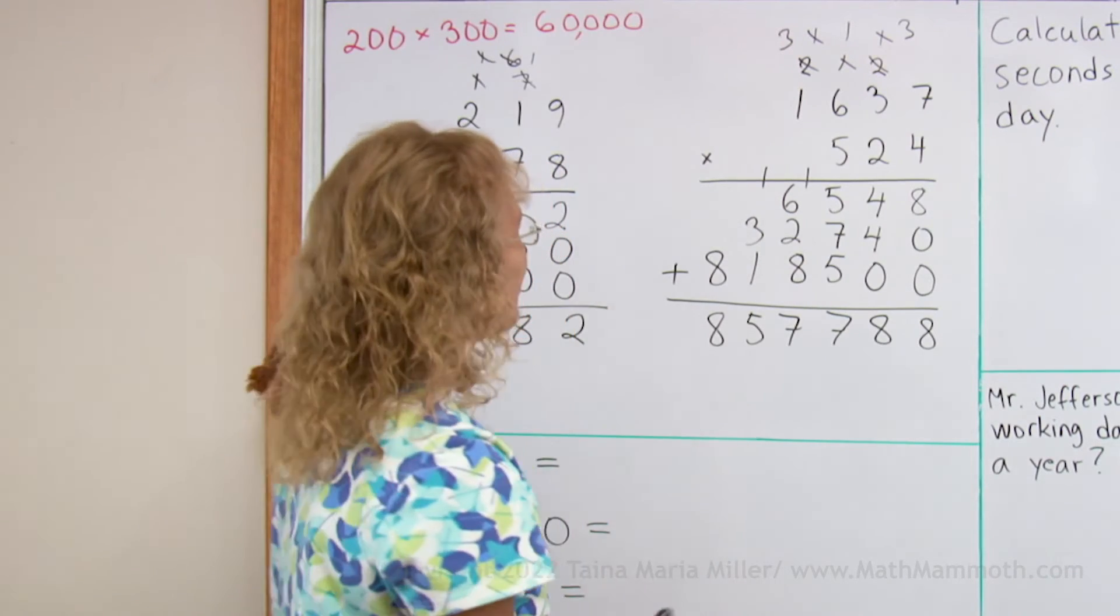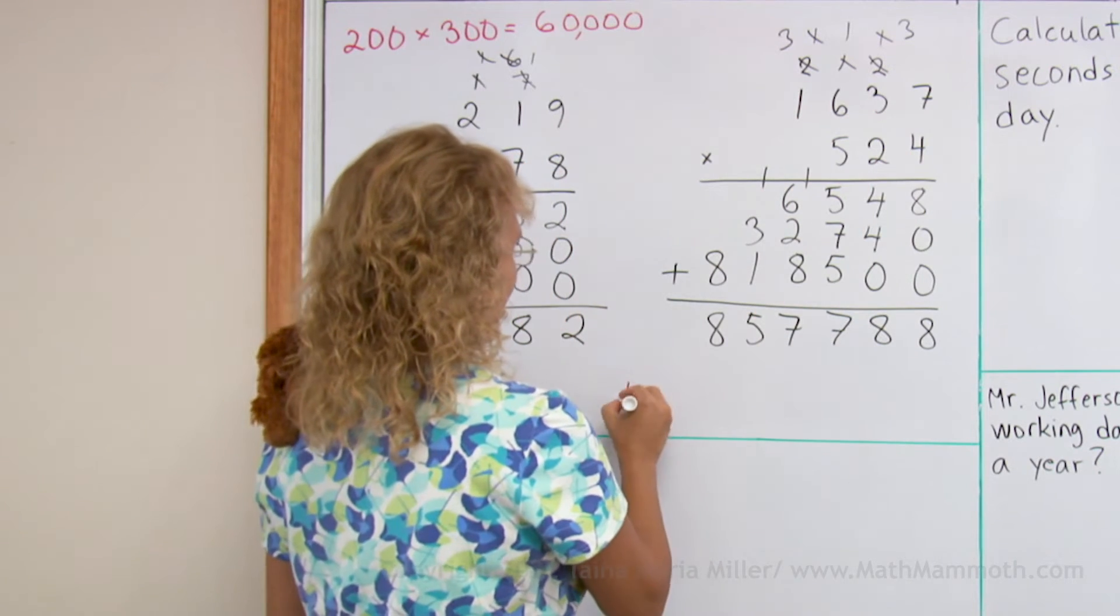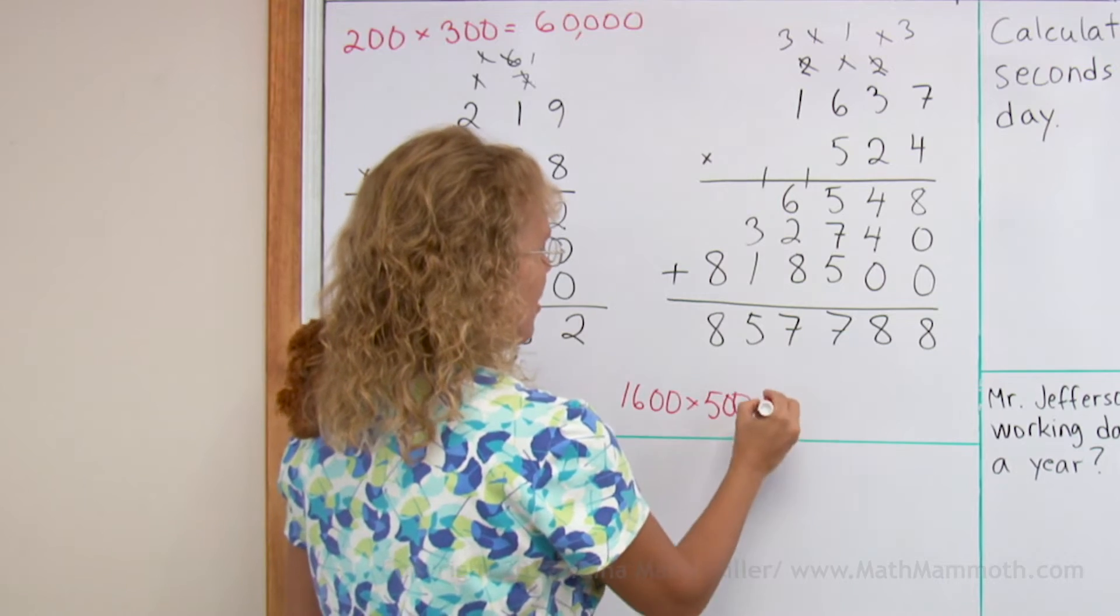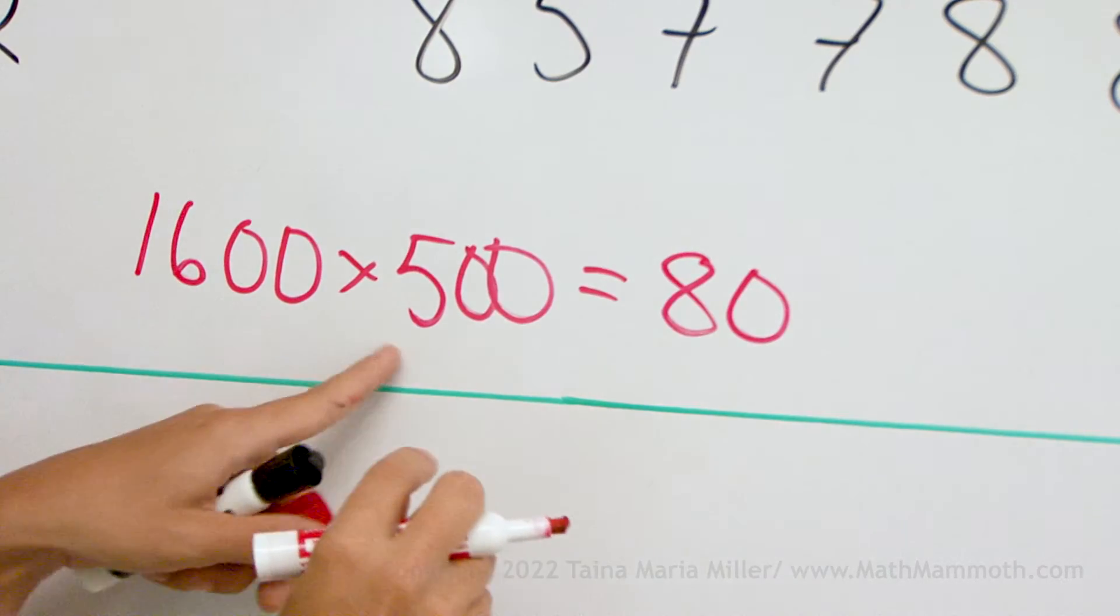All right, let's also estimate the answer. I forgot it in the beginning. If I estimate this, I would take 1600 times 500. Five times 16 is 80, and then one, two, three, four.